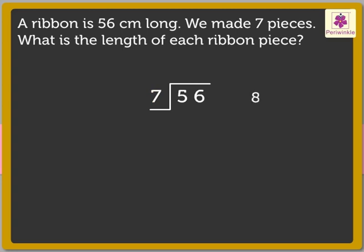We know 8 into 7 is equal to 56. So, we will write 8 as the quotient. Now, write 56 below the dividend. Subtract 56 from the dividend. We get 0 as the remainder.